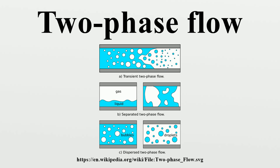Another case where two-phase flow can occur is in pump cavitation. Here a pump is operating close to the vapor pressure of the fluid being pumped. If pressure drops further, which can happen locally near the vanes of the pump for example, then a phase change can occur and gas will be present in the pump. Similar effects can also occur on marine propellers, and wherever it occurs, it is a serious problem for designers.